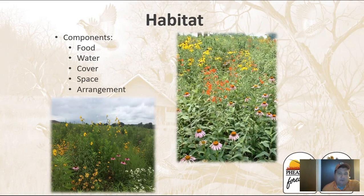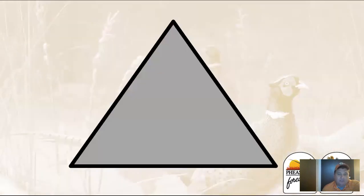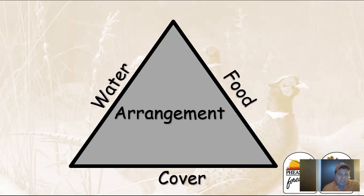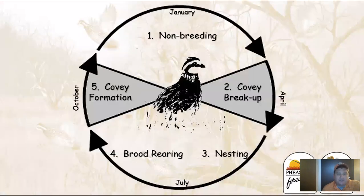A lot of us may remember learning about the basic triangle where we have water, food, and arrangement for our birds or species that we're managing for. That arrangement — where those requirements occur — can also change throughout the year.